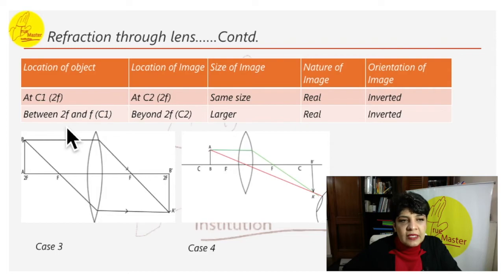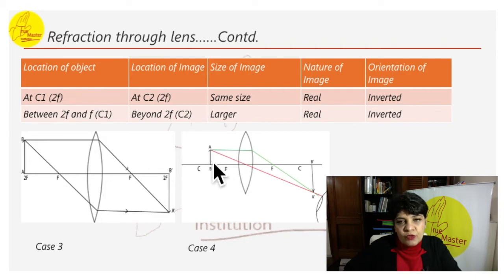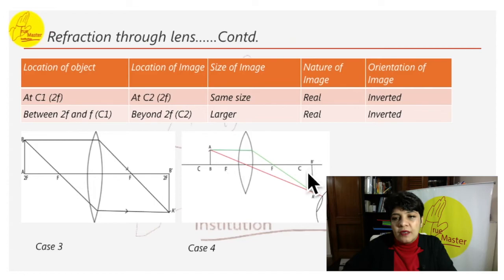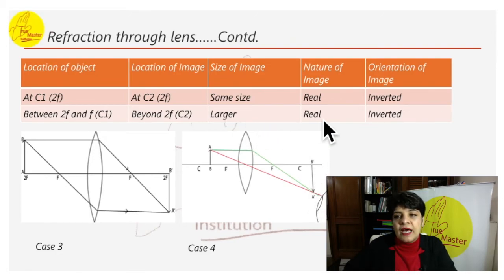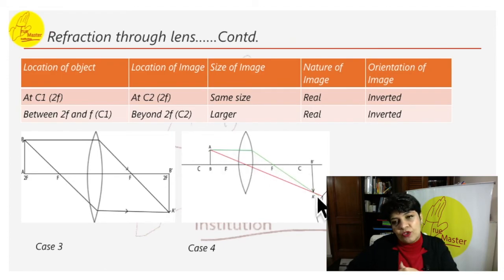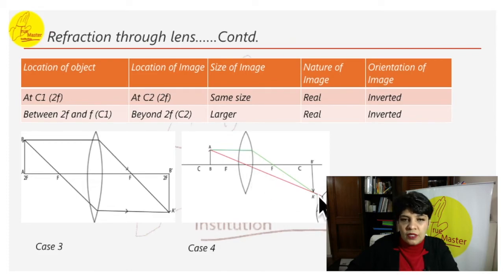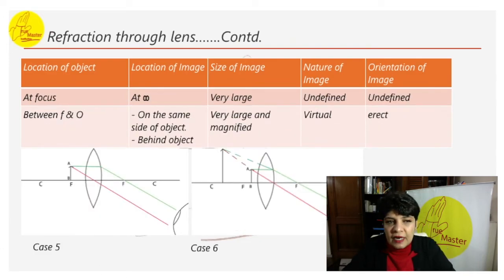Case 4: object is placed between 2f and f. The image is formed beyond C (beyond 2f). The image is larger in size, real, and inverted. A parallel ray bends through the focal point; a ray through the center goes straight, and they meet beyond 2f.